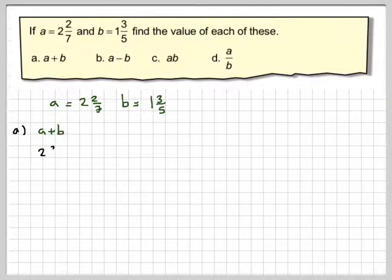A plus B will be equal to 2 and 2 sevenths plus 1 and 3 fifths, which is equal to 2 plus 1, which makes 3, plus 2 sevenths plus 3 fifths. Now, in order to add these two together, we need a common denominator, which is going to be 35.